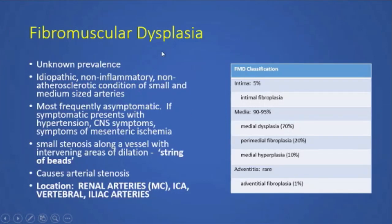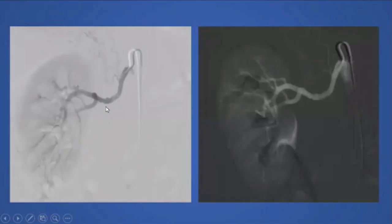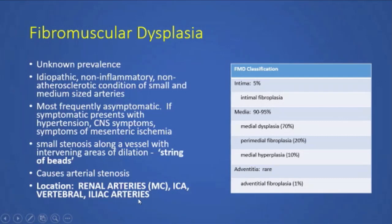There is a classification system for FMD with the most common being the medial type, seen in about 70%. Medial dysplasia accounts for 90–95%, with the intimal type ranging around 5%, and the adventitial type being rare. It's idiopathic, not inflammatory, and not atherosclerotic. It's most frequently asymptomatic, though patients may present with refractory hypertension. The classic angiographic sign is the string of beads appearance, most commonly in the renal arteries.